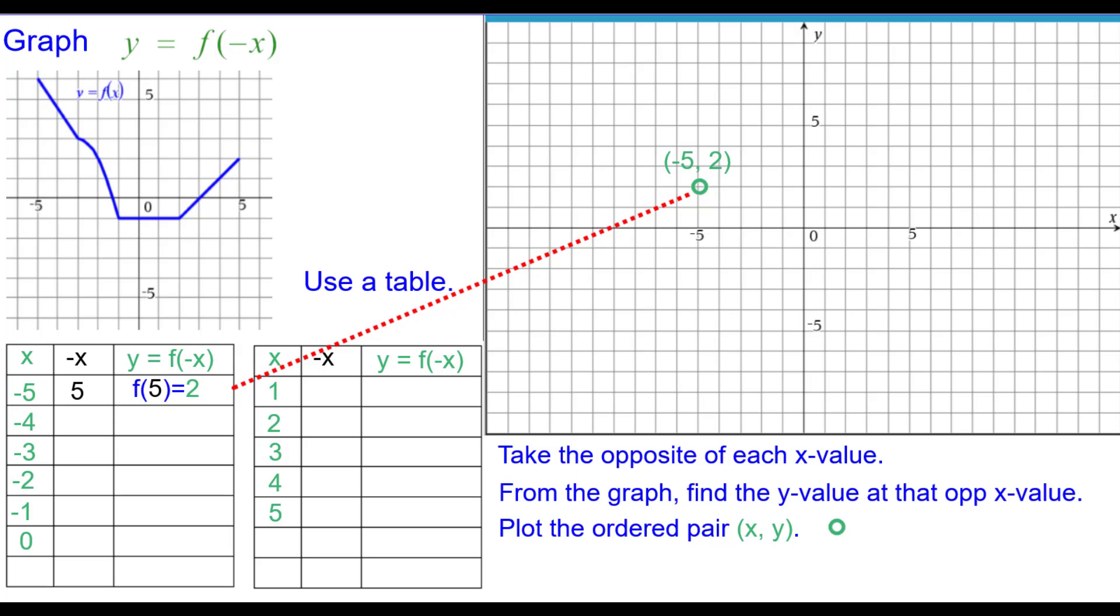Please press pause any time if I'm going too quickly. Negative 4, opposite is 4. f at 4 reading from the graph is 1, so negative 4 comma 1. The opposite of negative 3 is positive 3. f at 3 is 0, so negative 3 comma 0.